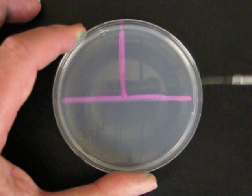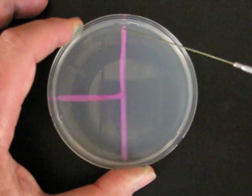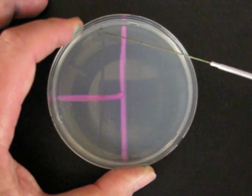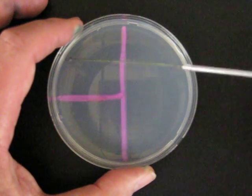For the final phase, the loop is flamed again and the plate is rotated another quarter turn. Picking up organisms from the second phase, the third phase is streaked.